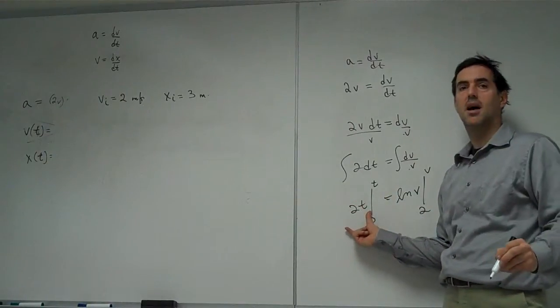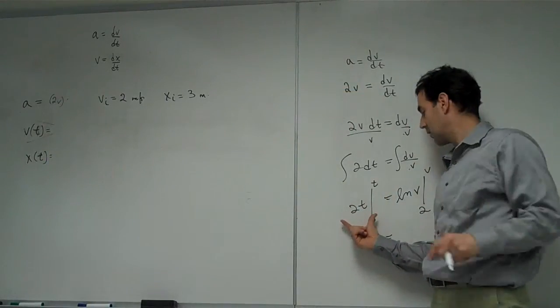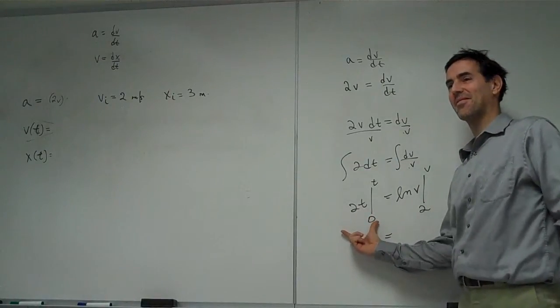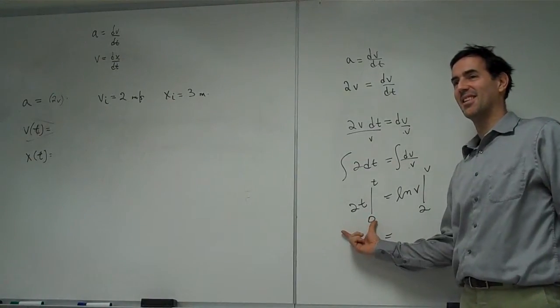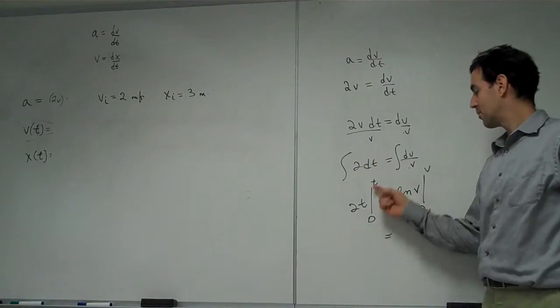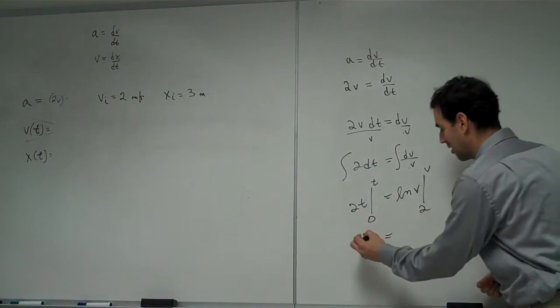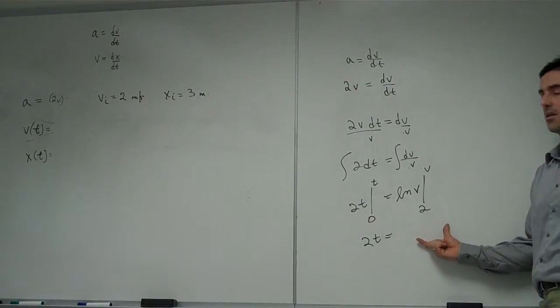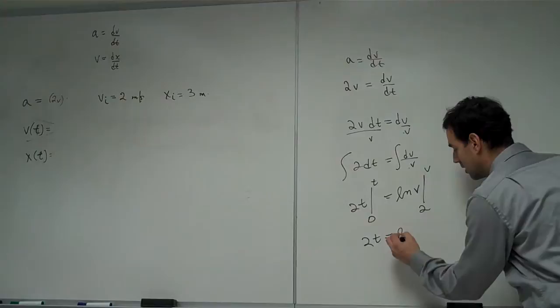Putting those limits on the right side. On the left side. Fred, where does that go? 2t. Good. Putting in the limits on the right side. Sean: We're going to write ln(v) minus ln(2). Good.